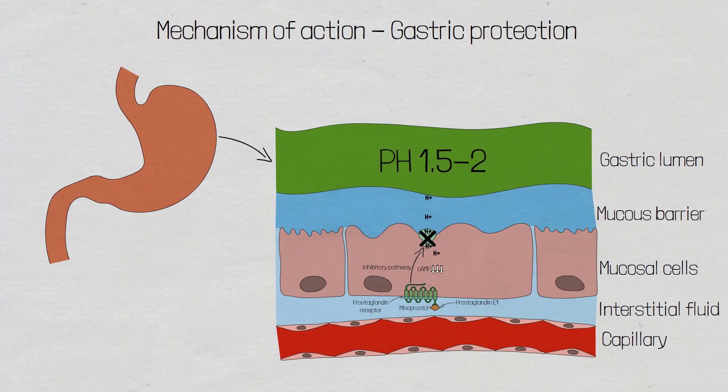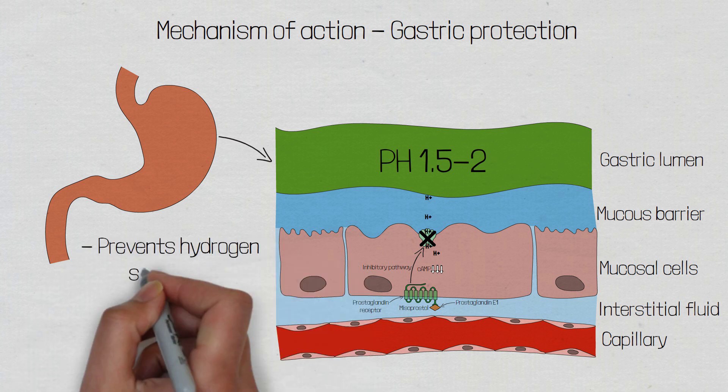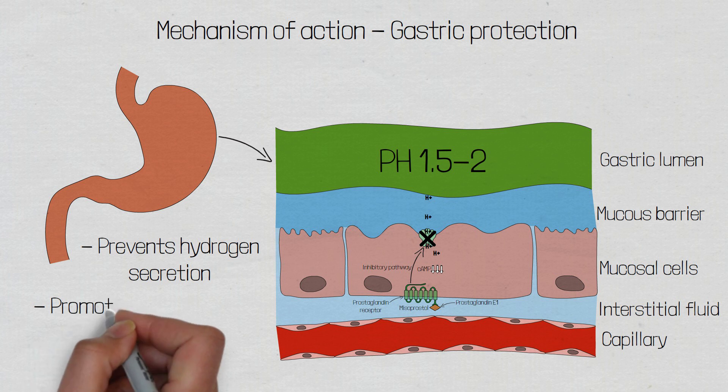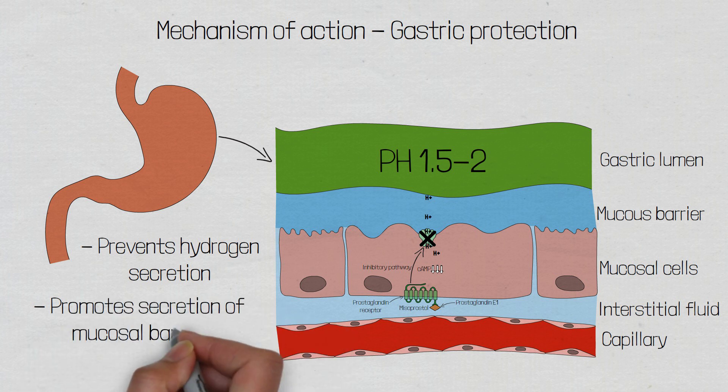Stomach acid has a low pH because it is responsible for the digestion of food and the activation of certain enzymes. But in normal health, this acidity does not cause harm to the endothelial cells which line the stomach wall. This is due to the mucosal barrier which lines the epithelial cells and consists of a thick mucus with high concentrations of bicarbonate. Misoprostol not only prevents the excretion of hydrogen ions, but will also increase the amount of mucus and bicarbonate which forms the protective barrier.